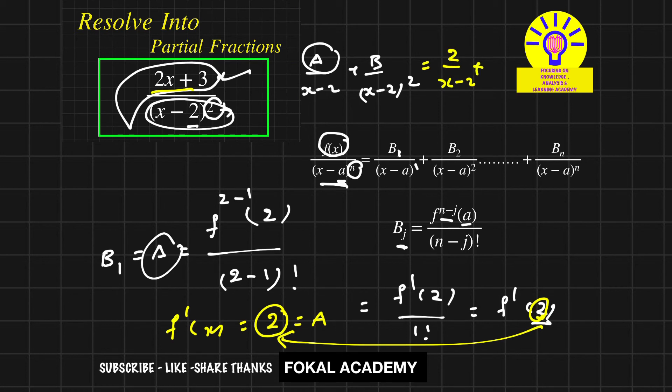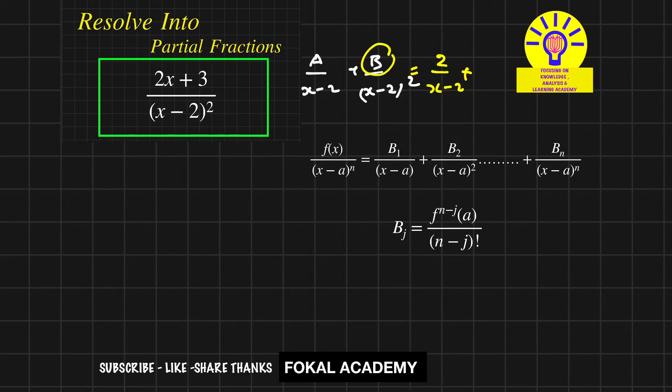Now similarly find the B value, the second constant. B₂ equals B. Here j equals 2, so substitute: f⁽²⁻²⁾(2) divided by (2 - 2)! = f(2) / 0! = f(2).